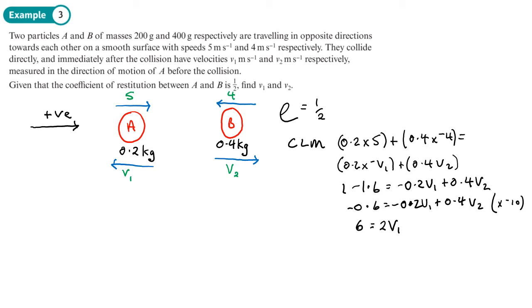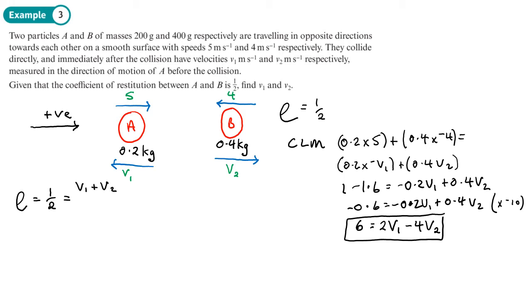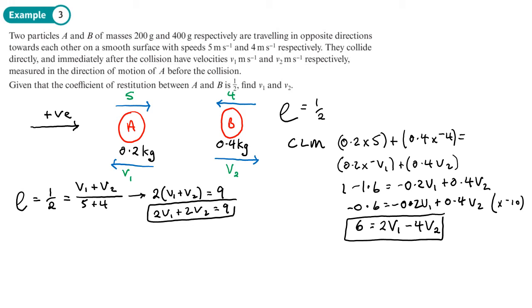For the restitution equation: the speed of separation is v1 plus v2 (because of the directions chosen), and the speed of approach is 5 plus 4 equals 9. With e equals one half, cross-multiplying gives 2(v1 plus v2) equals 9. Expanding: 2 v1 plus 2 v2 equals 9. That's equation two. Now I solve simultaneously.